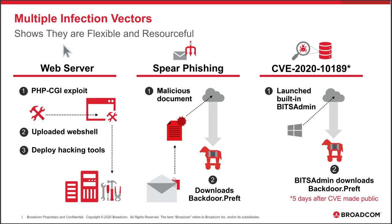The interesting thing about this infection vector was how quickly they turned over this exploit. It wasn't a zero-day — in fact, the exploit had been published five days earlier by a researcher who also published proof-of-concept code, and it was patched a day later. But just four days after the patch, we observed Stonefly using it to target an organization. They utilized a Java deserialization vulnerability to launch the built-in legitimate bitsadmin tool, which then downloaded their custom backdoor, Backdoor.Preft, from a compromised website. The turnaround time really shows how resourceful and flexible Stonefly can be.